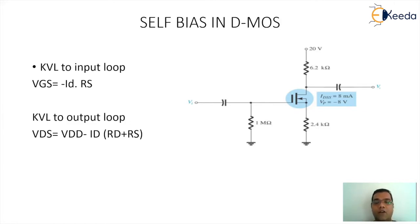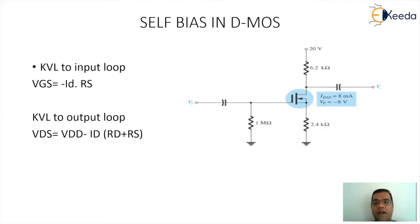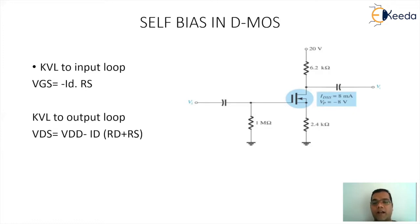Applying KVL to the input loop to get the value of VGS, it will be minus of ID·RS. Using the equation ID equal to IDSS·(1 minus VGS/Vp)² and substituting VGS equal to minus ID·RS, on solving you will get two values of ID. One value will be applicable to the circuitry and the other will not. Normally we take the lower of the two values obtained. That value of ID is the drain current. Applying KVL to the output loop gives VDS equal to VDD minus ID·(RD plus RS), from which you get the value of VDS.